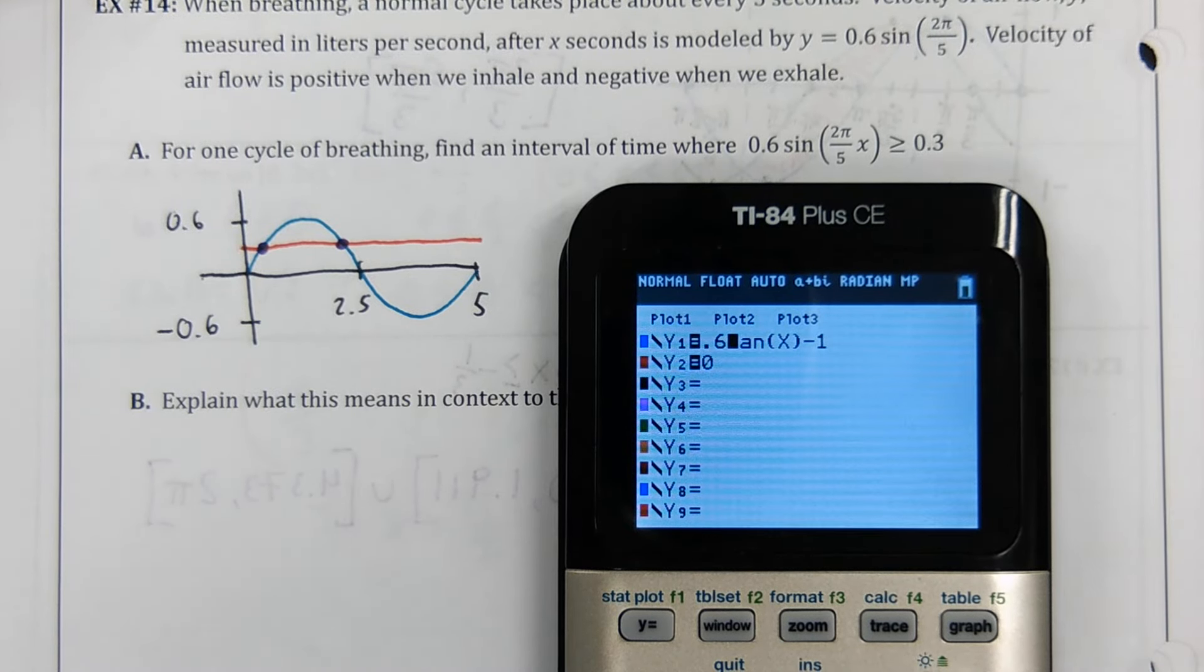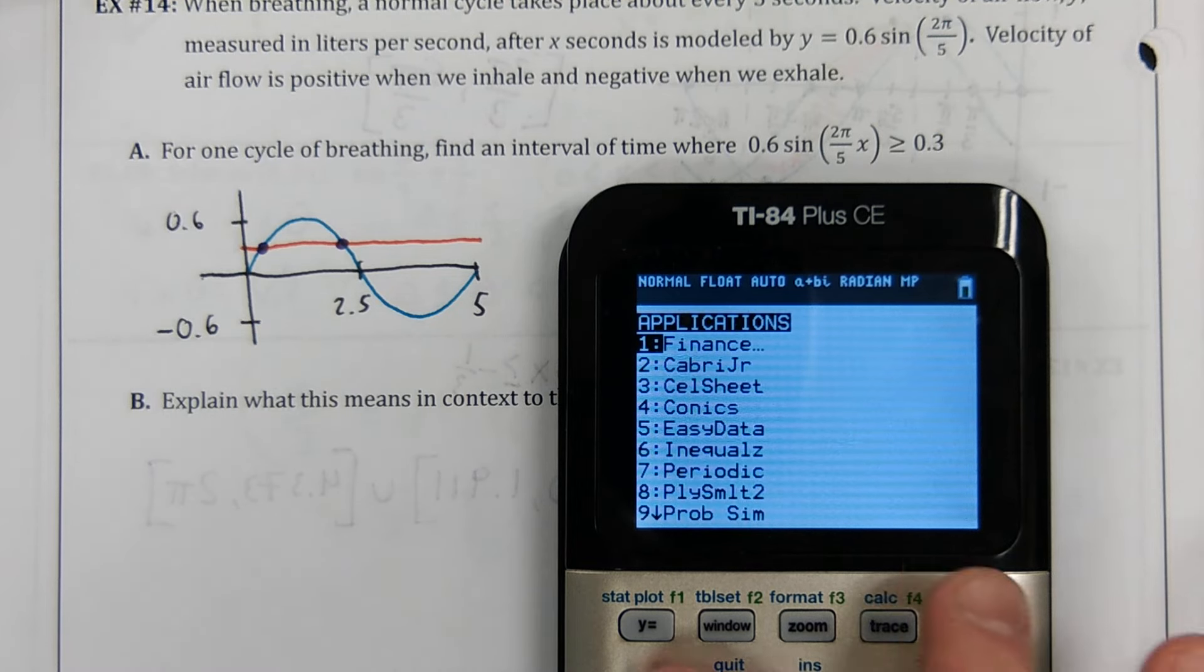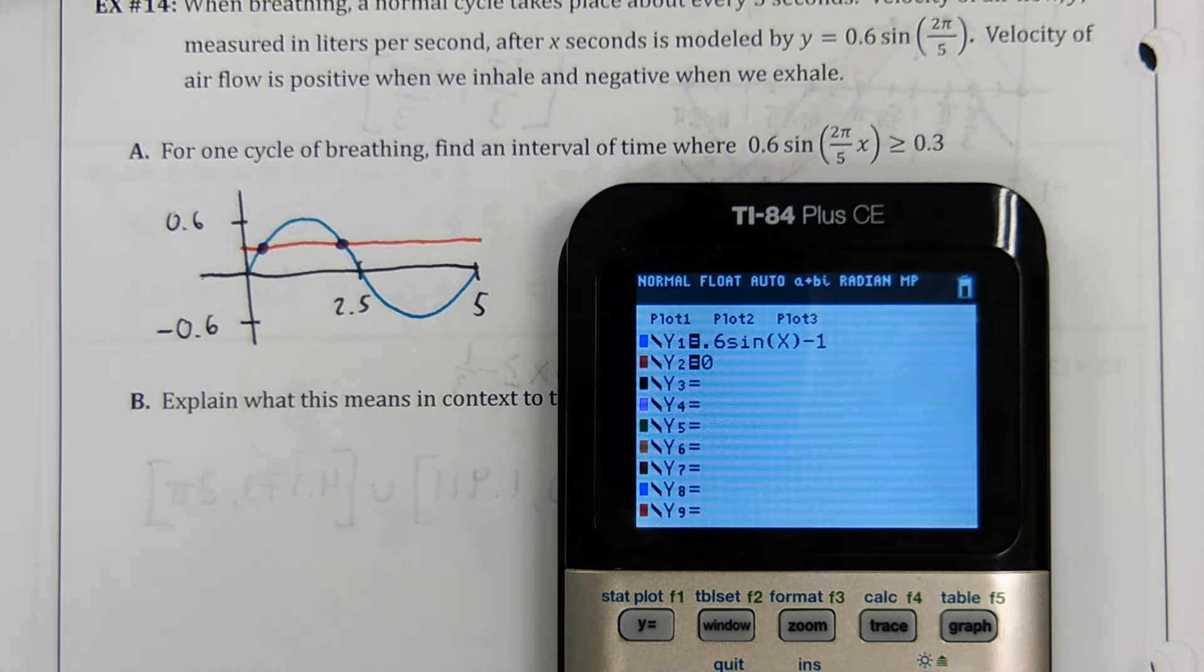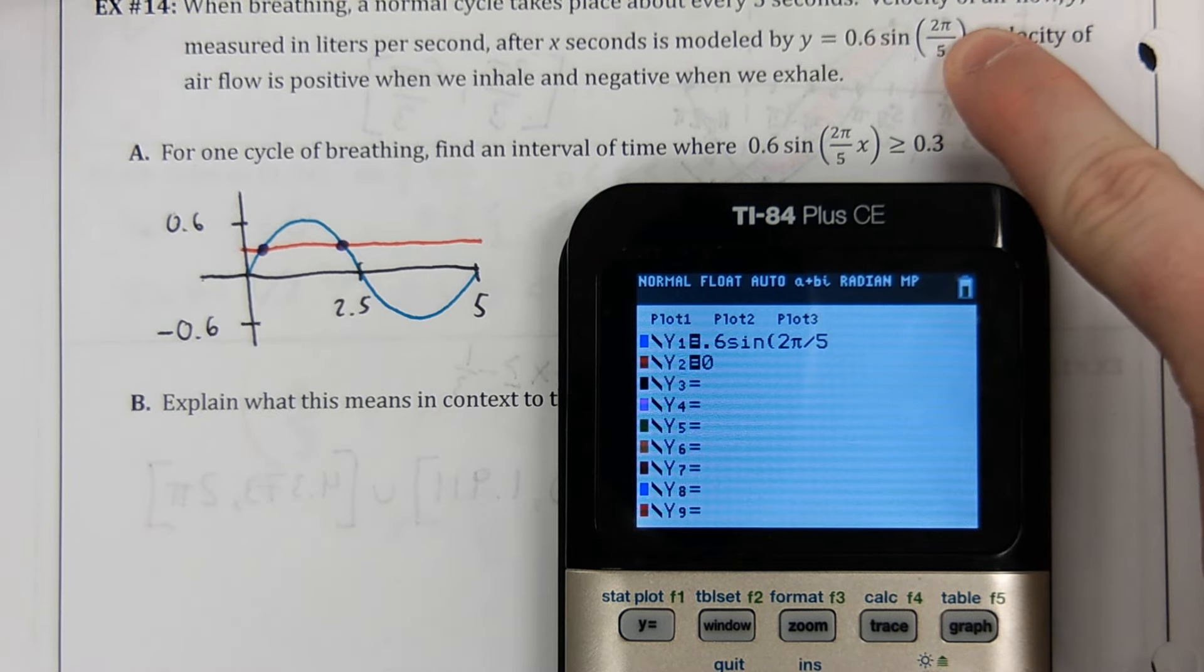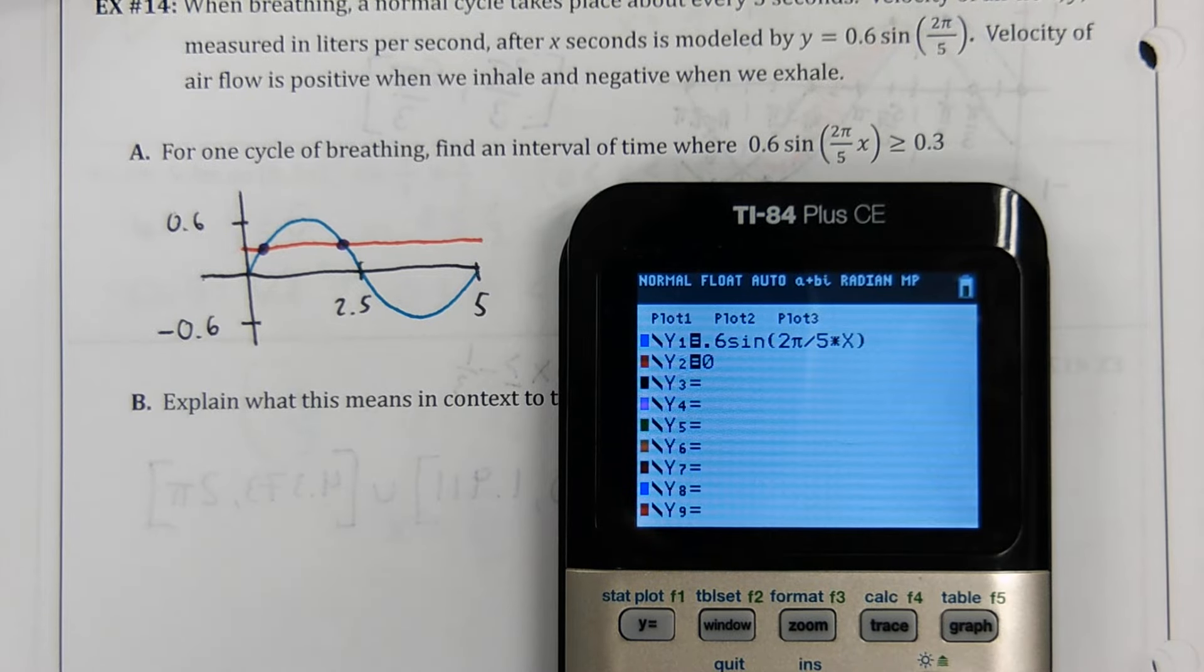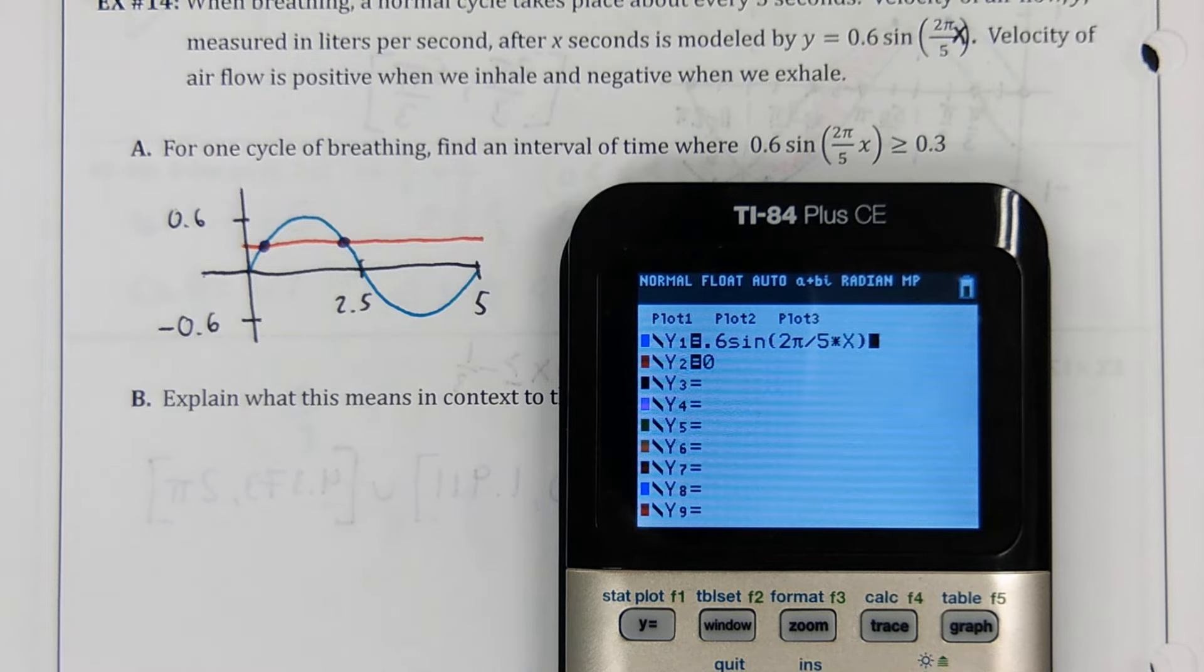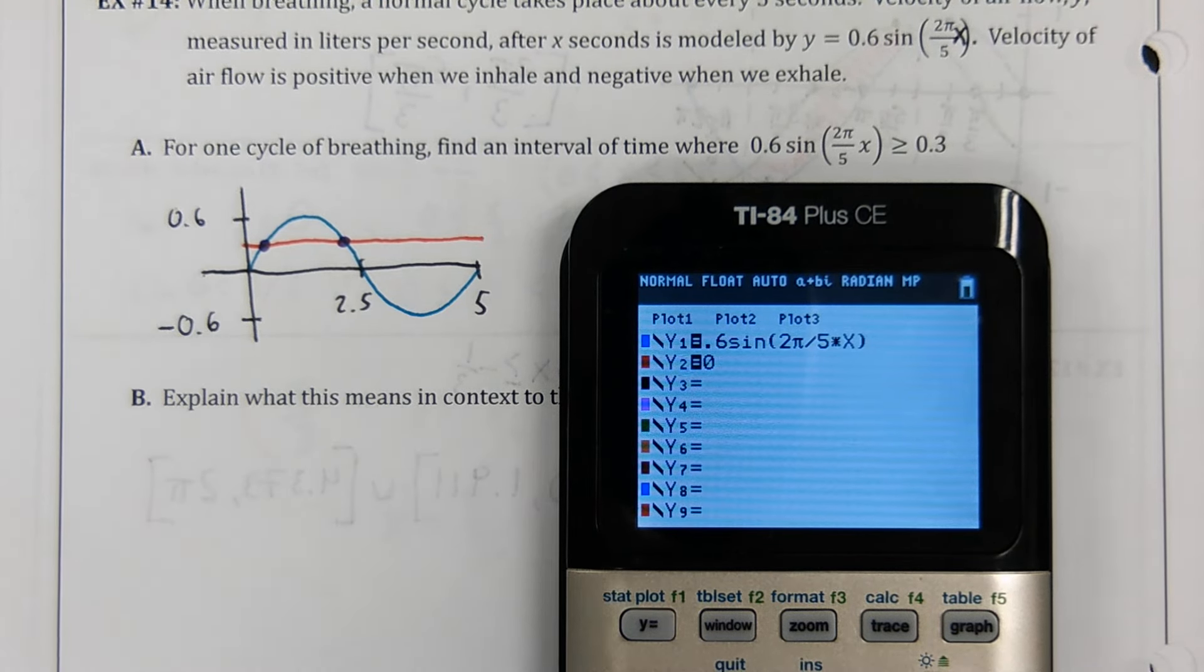That means we need to know that intersection point and that intersection point. Because from this dot to this dot, we are at or above 0.3. And since it has an equal to bar, we're going to have brackets on those answers. So I hope it's obvious that it's going to be bracket this number to bracket this number. Let's figure out where we be. That first equation is 0.6 sine of 2 pi divided by 5. There's no x in this equation. Times x. There's supposed to be an x in there. Look at that. Goodness. We're going to throw an x in there. You don't put an x in there, it's going to graph a horizontal line.